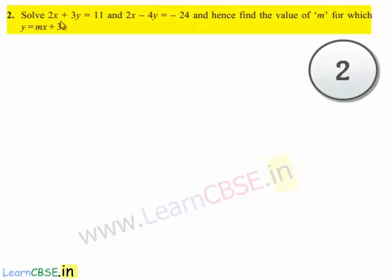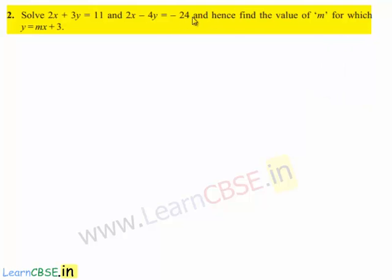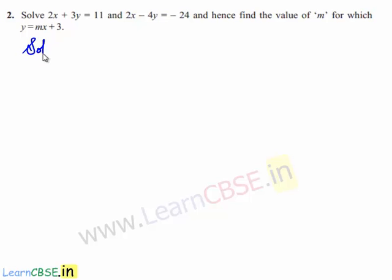Coming to the second problem: solve 2x plus 3y is equal to 11 and 2x minus 4y is equal to minus 24, and hence find the value of m for which y is equal to mx plus 3. So let us see the solution of this problem.